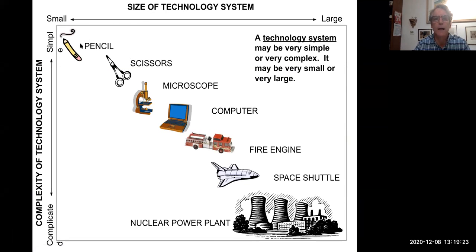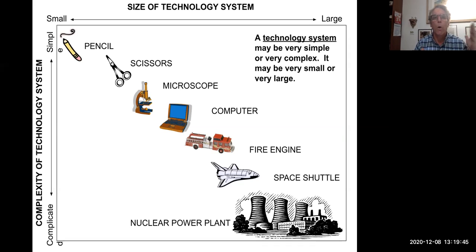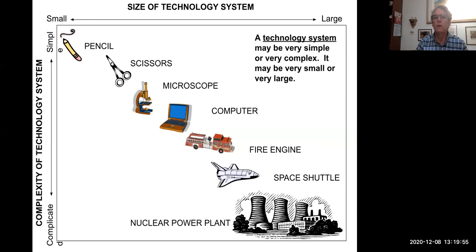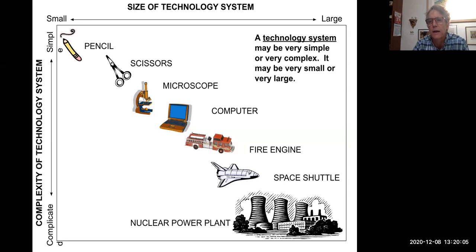These are the sizes of technology systems. My favorite is the pencil. Is the pencil a technology system? Anything made by man is technology. It is a system because the graphite has to be encased by wood so that the person can actually hold on to it. It needs to be able to be sharpened so the graphite is exposed to write with, and it has an eraser to erase the graphite. So yes, a pencil is a technology system — it's a very small, very simple one, but it is.